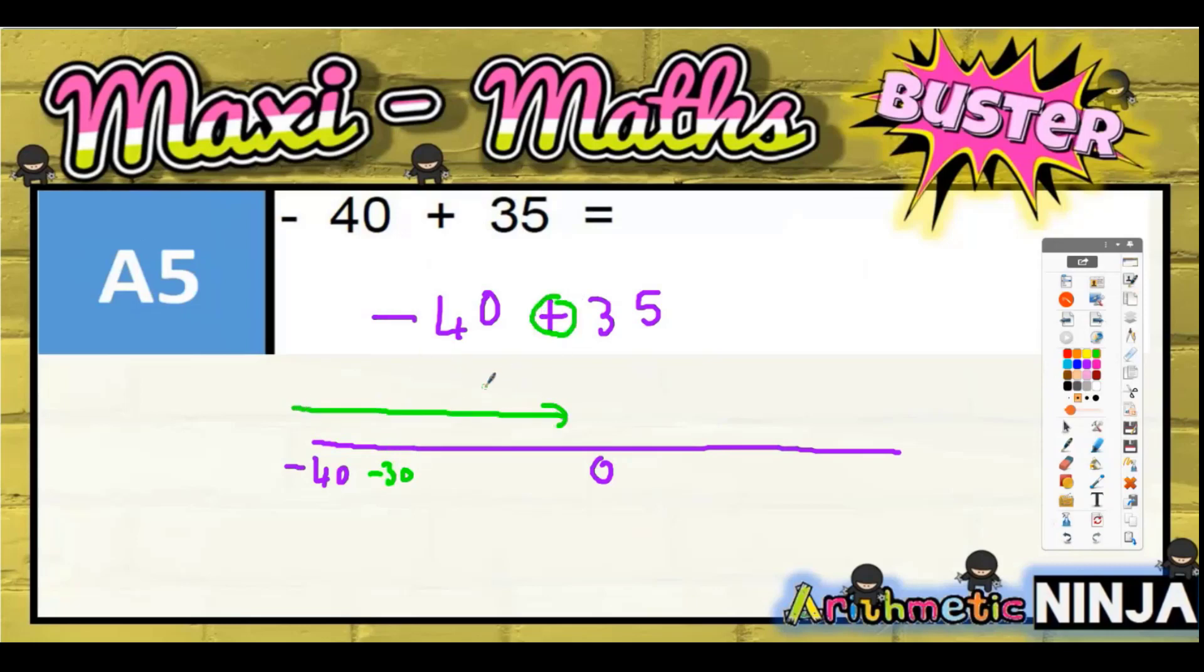For adding, adding means go that way. Okay, so add another 10 will take you to negative 20. Add another 10 would take you to negative 10, and that means you've done 30 so far, so you've done plus 10...